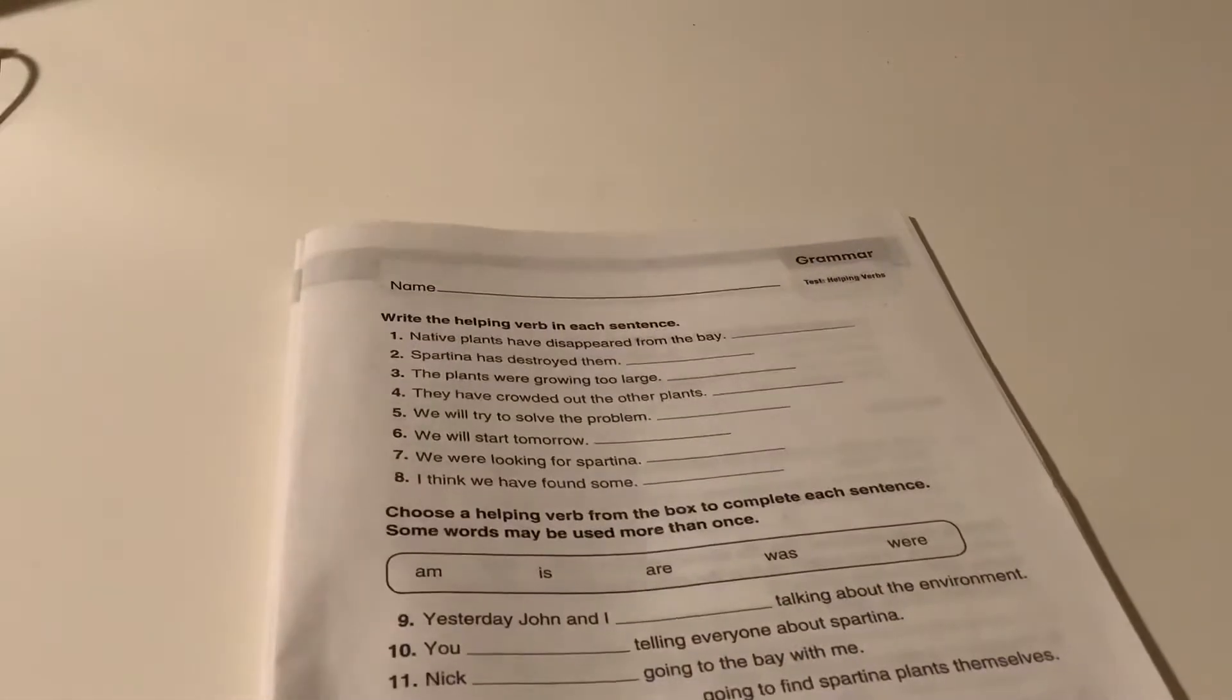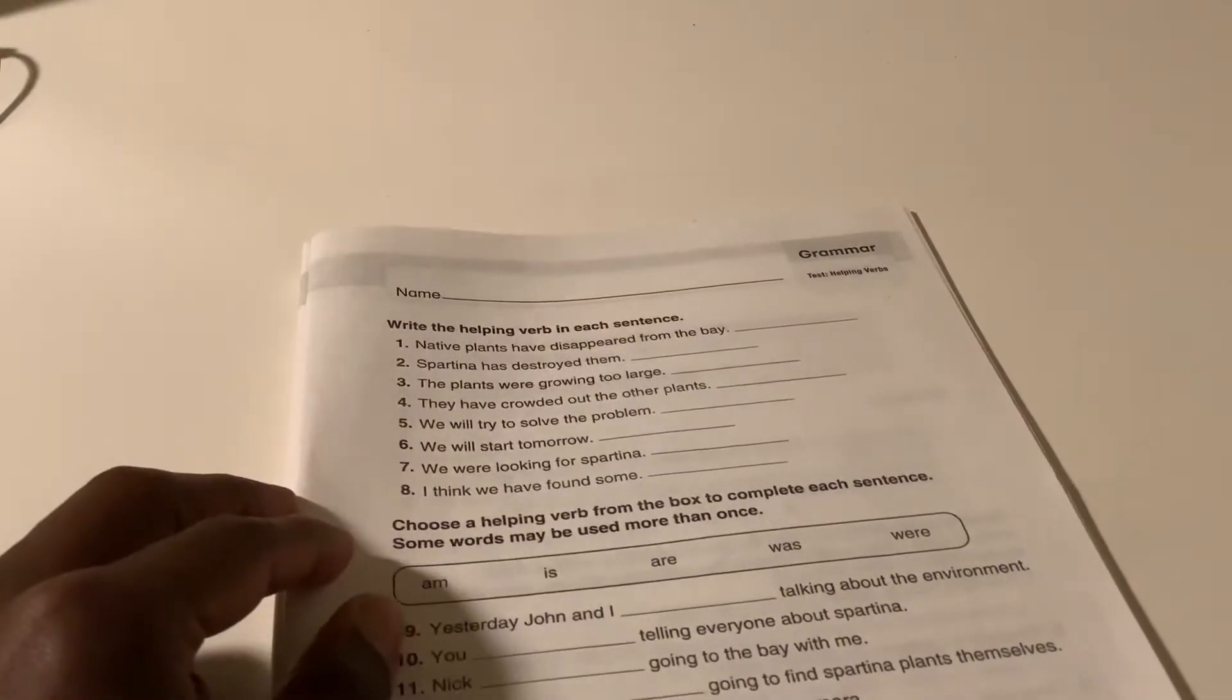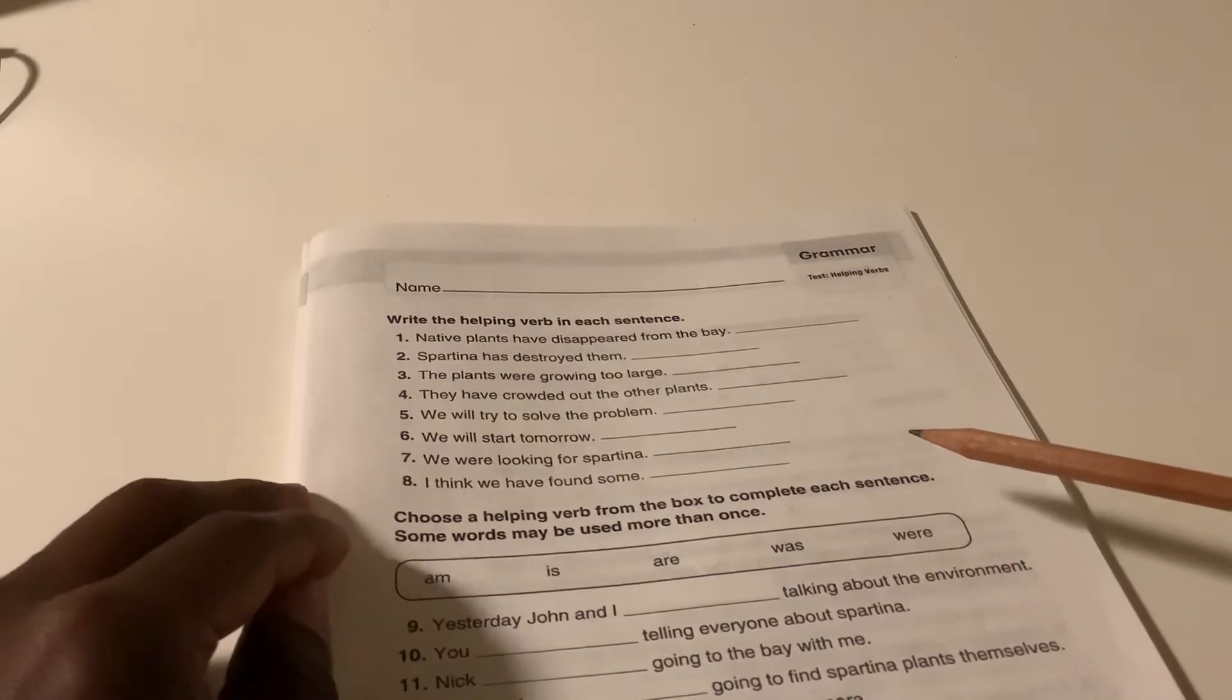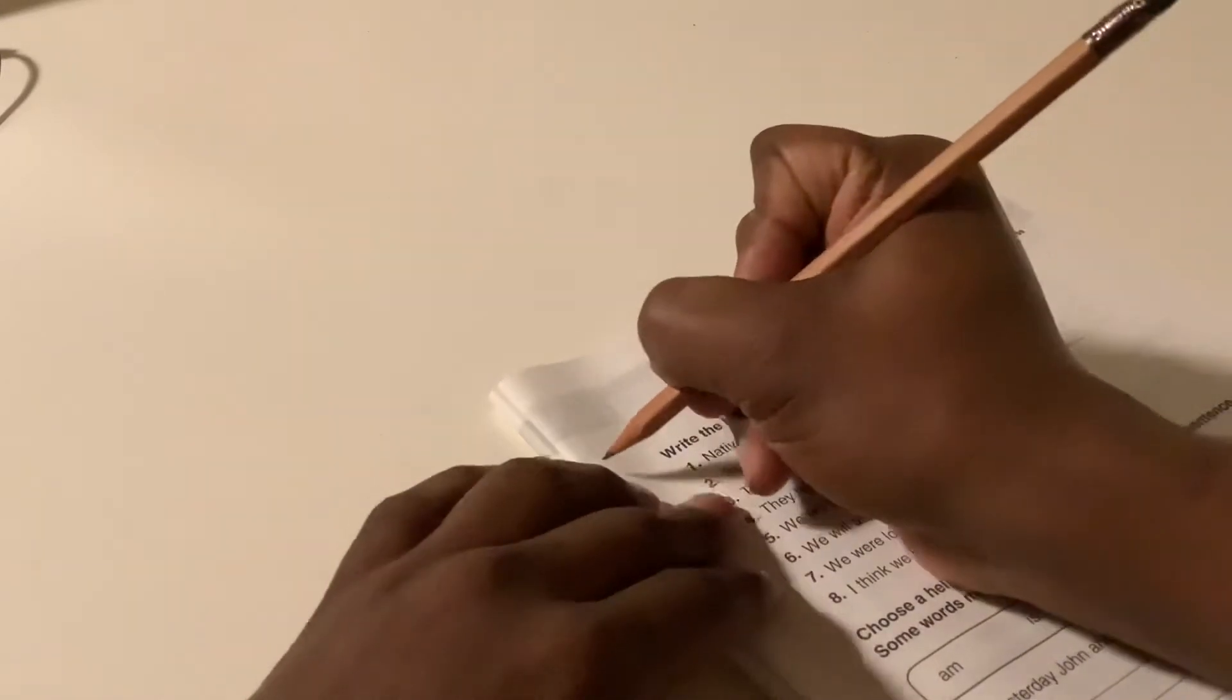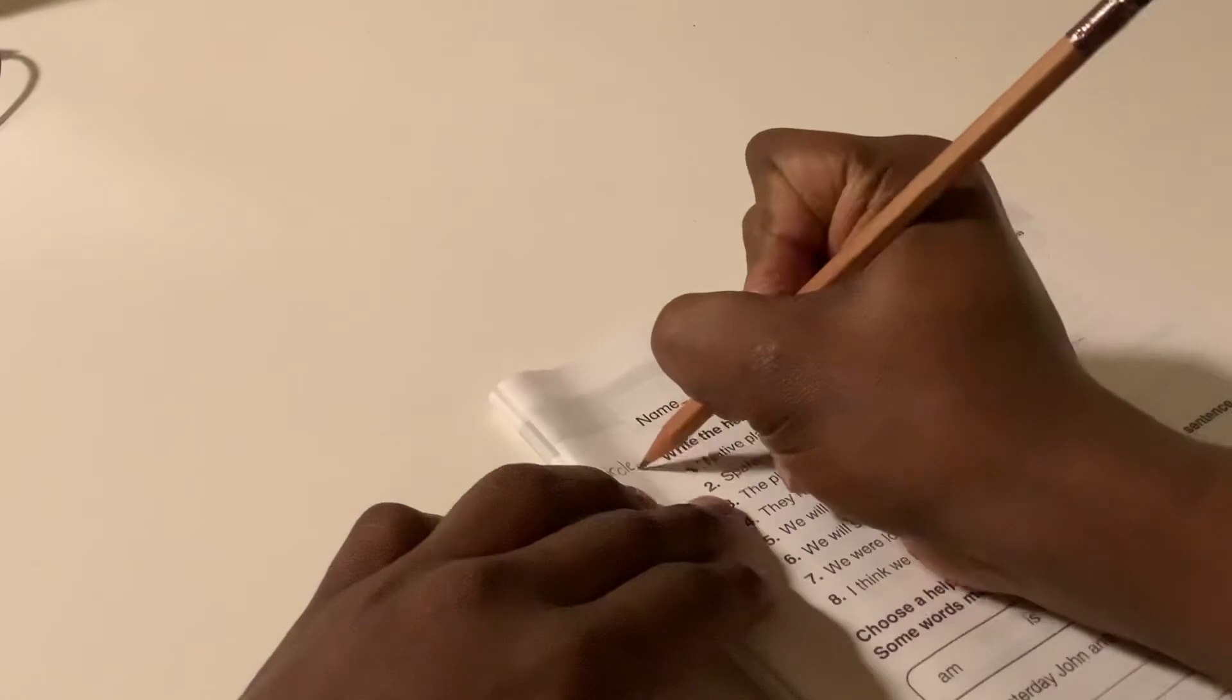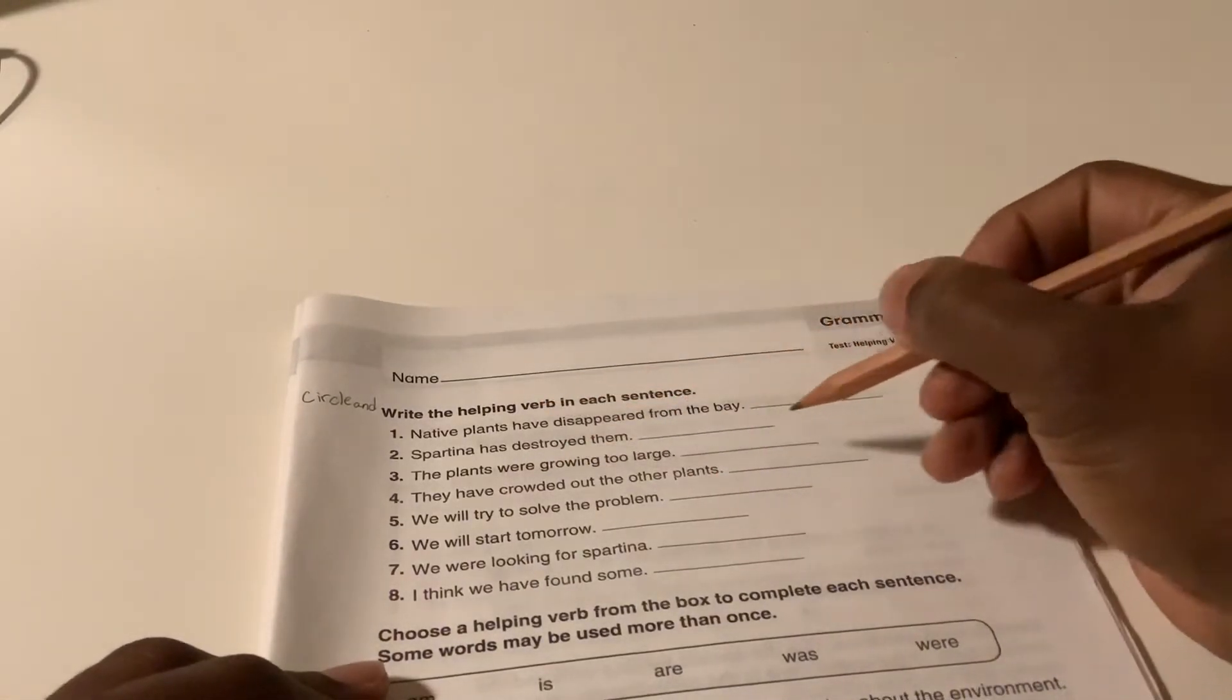I'm going to read through each of the questions, so please listen very carefully. For part 1, I'm going to change the directions. I'm going to say, circle and write the helping verb in each sentence. So you're going to circle it and then you're going to write it.